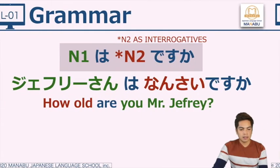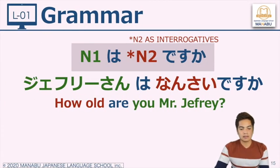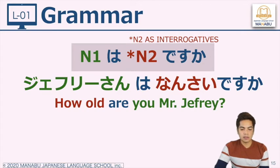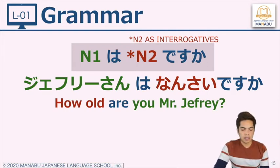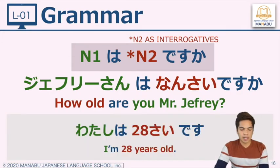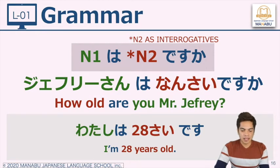Another example: Chifuri-san wa nansai desu ka? We use the interrogative 'nansai,' which in English means 'how old.' We want to ask about the subject's age. Translated: how old is Mr. Jeffrey? So how old are you, Mr. Jeffrey? We answer the word nansai with our age: Watashi wa nijuuhassai desu — I am 28 years old.